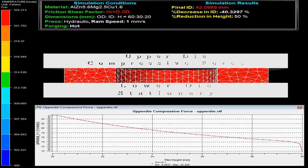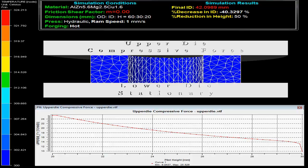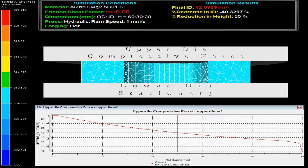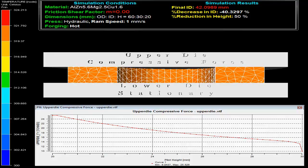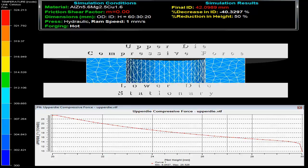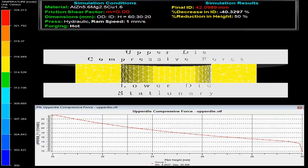On the top right side simulation results show the final inner diameter as 42 mm with decrease in inner diameter by minus 40.3 percent on 50 percent reduction in height at the bottom.